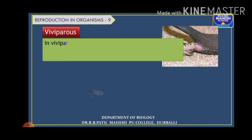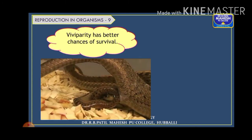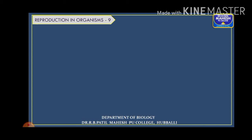Viviparous animals give birth to young ones directly; they are also called eutherian animals, and humans are an example. In viviparous animals, almost all mammals, the zygote develops into the young one directly inside the body of the female, taking nourishment from the mother. After a certain growth period the young ones are delivered. Complete protection is provided inside the mother's womb via the placental connection, so the chances of survival of the young ones are higher.